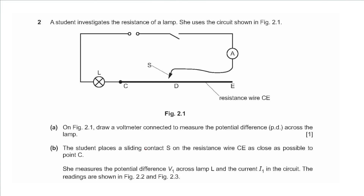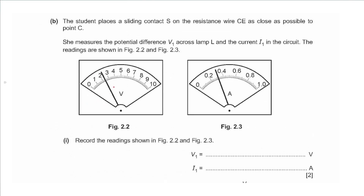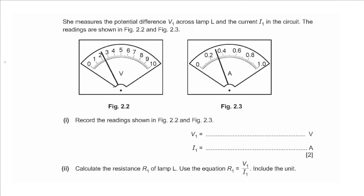Question 2 says a student investigates the resistance of a lamp using a circuit shown in figure 2.1. Draw a voltmeter connected to measure the potential difference across the lamp — so this is in parallel with the lamp. We draw a circle with a V inside and two terminals connected to both ends of the lamp. The voltmeter reading: there are five divisions between 2 and 3, so each division is 0.2, giving 2.4 volts.